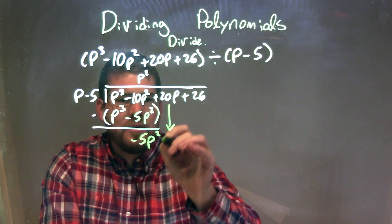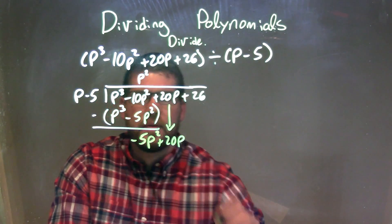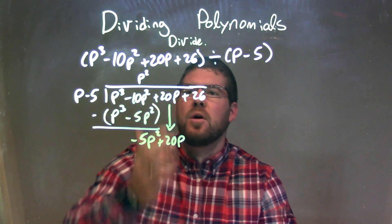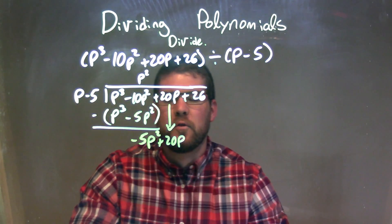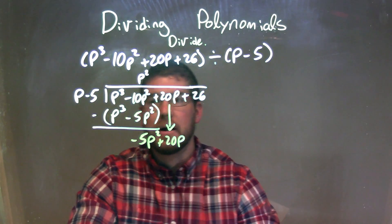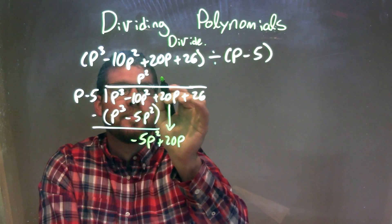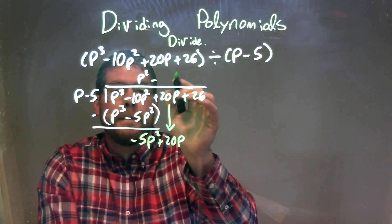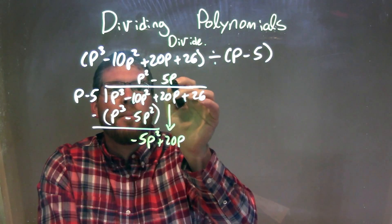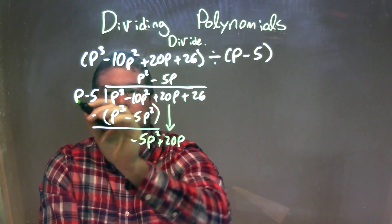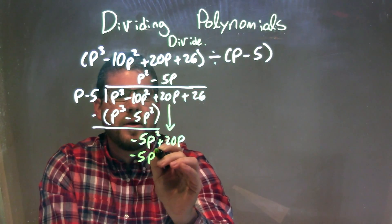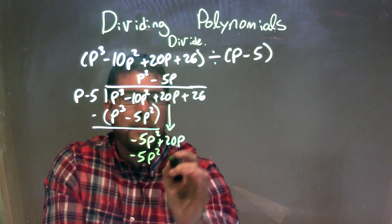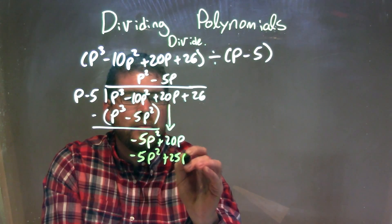Let's bring down the plus 20p right there. Ask the same question again: what times p gives me minus 5p squared? And that's minus 5p. Minus 5p times p is minus 5p squared, and minus 5p times minus 5 is positive 25p.